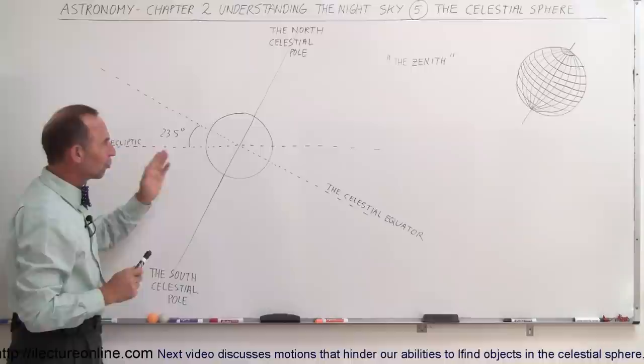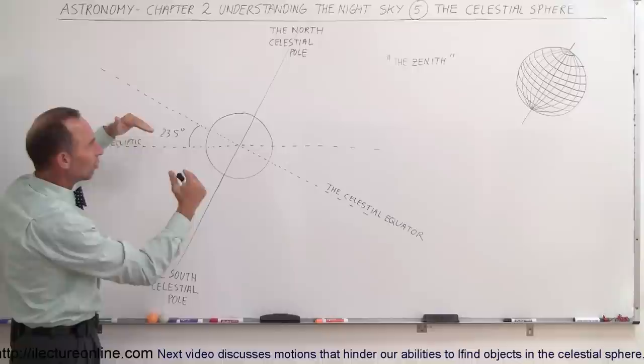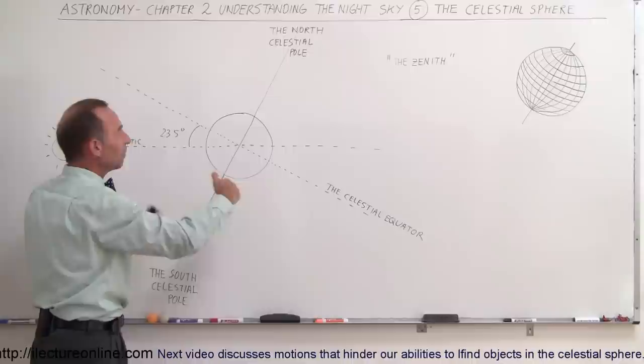Since we're observing from the Earth, and since we already have an equator and poles on the Earth, it made a lot of sense to set up the celestial sphere — the coordinate system of the universe — along the same orientation as the coordinate system of the Earth. So we wanted the north and south pole of the universe to be along the same lines as the north and south pole of the Earth, and the equatorial plane of the universe to be in line with the equatorial plane of the Earth.